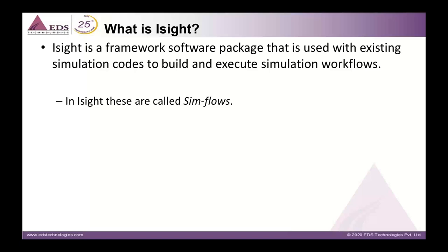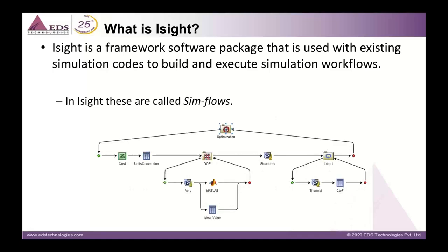iSight provides automation so that these tools can be driven in an automated fashion, passing data from one tool to another without any human intervention. A typical iSight workflow looks like a process flow diagram, with a top-level task driving all tasks underneath it. The green color indicates the start of the process and the red color indicates the end of the process.